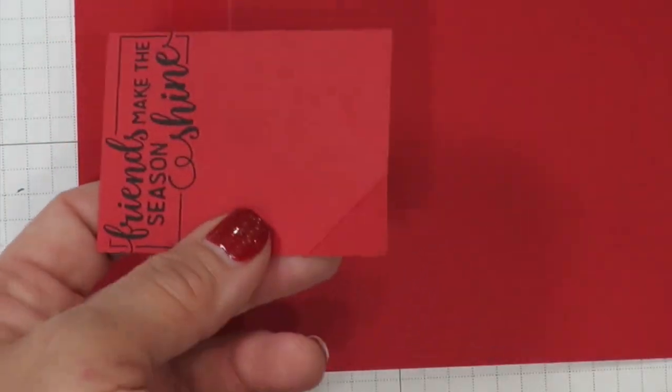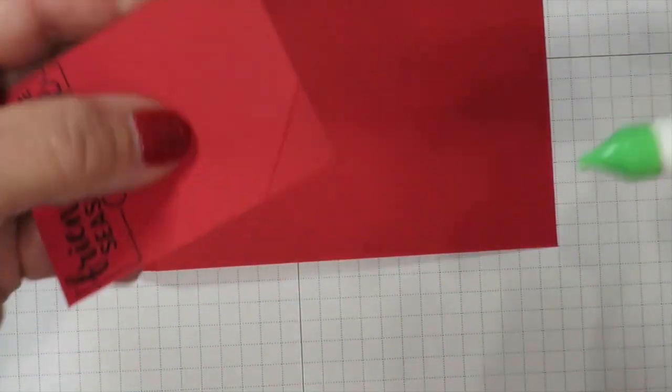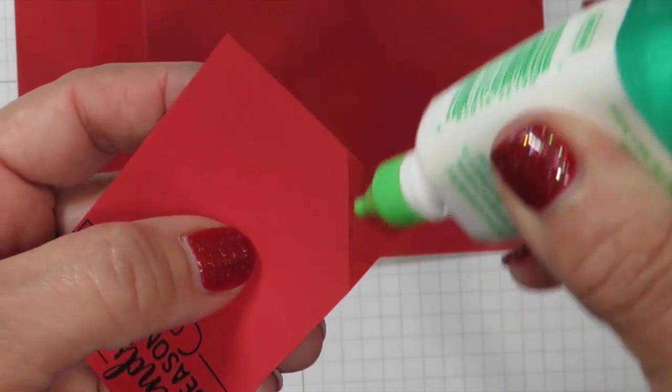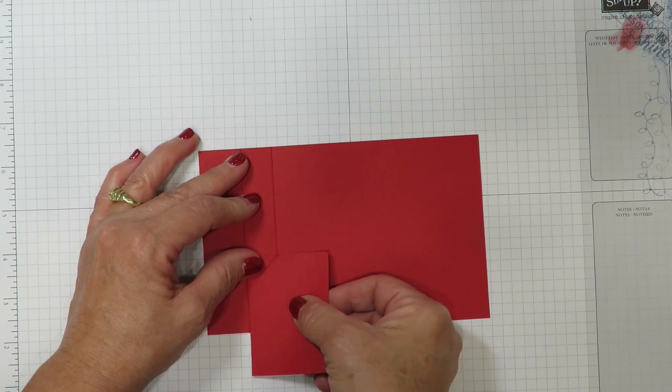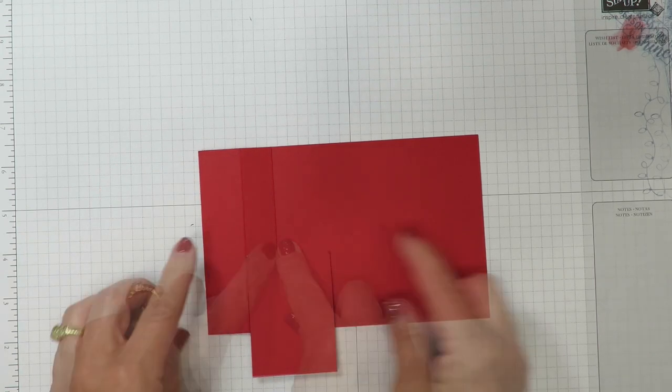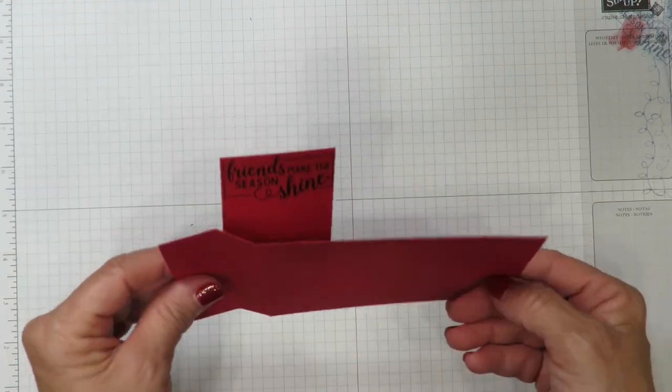This is that tab we're going to place some liquid glue on. I prefer to use liquid glue because it gives me a little bit of wiggle room before it dries. This then is going to get lined up here near the pencil mark between the two score lines so I'm going to let that sit for just a second and let that dry.